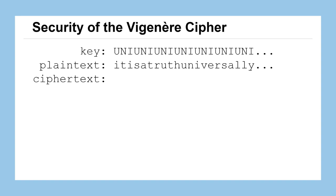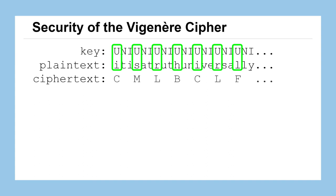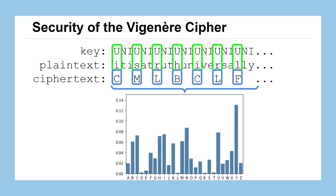We have our plain text message and a key that is only three letters long and repeats over and over. To understand how this message will appear in the ciphertext, specifically the frequency of those characters, we'll focus on certain groupings of characters at a time. For example, let's look at all the plain text letters that get encrypted when U is the key letter above them. If we create a bar chart of just those ciphertext letters, we'll see that the frequency chart looks very similar to English — like the English distribution shifted so that A is over U and E is over Y. This makes sense, because we're basically doing a Caesar cipher on each of those letters.